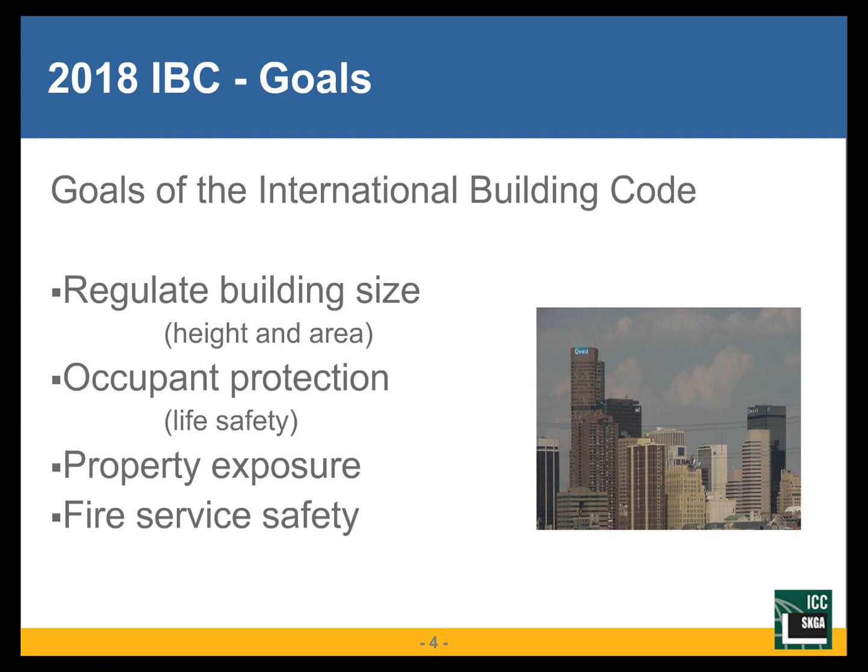A third goal is property exposure. When buildings are built near each other, any one building with a fire incident poses an exposure risk to an adjacent building. The adjacent building has provisions that if it's going to be built near property lines, it needs to protect itself from what may take place on adjacent property. Finally, a very important goal is protecting the fire service — ensuring that when emergency responders respond to a fire event, the building doesn't become a death trap, that it doesn't come down around them, and that they can safely perform firefighting techniques to bring the fire under control and assist occupants in evacuation.